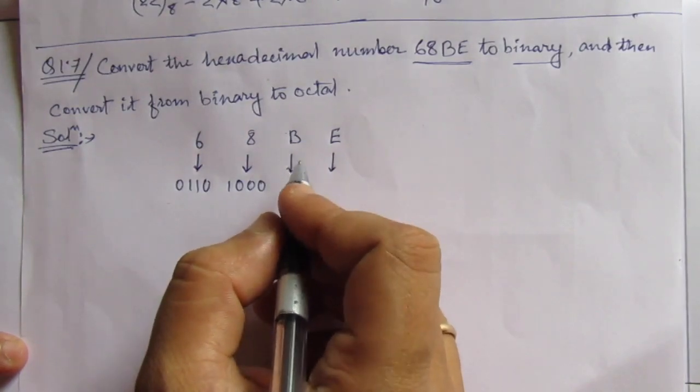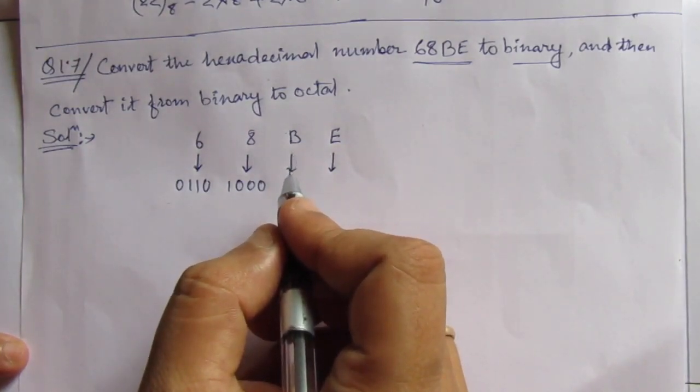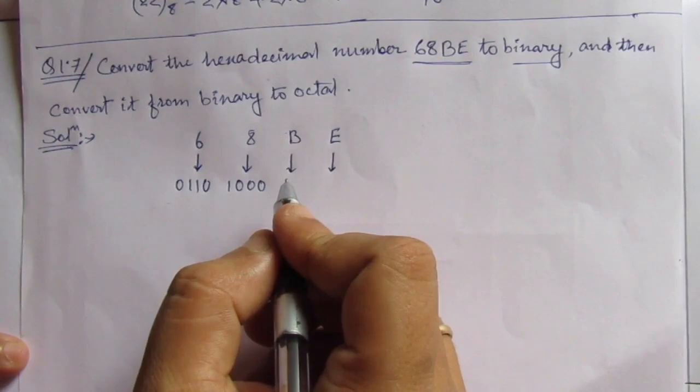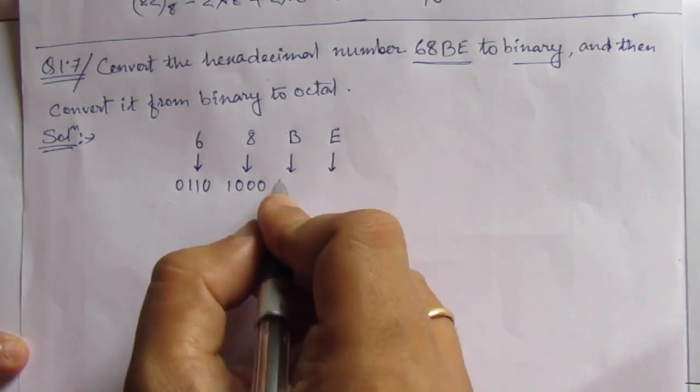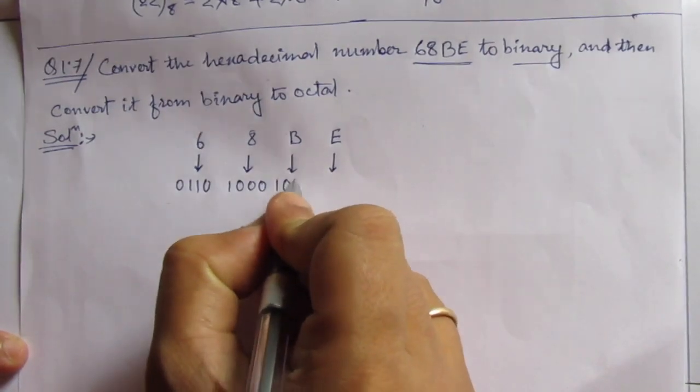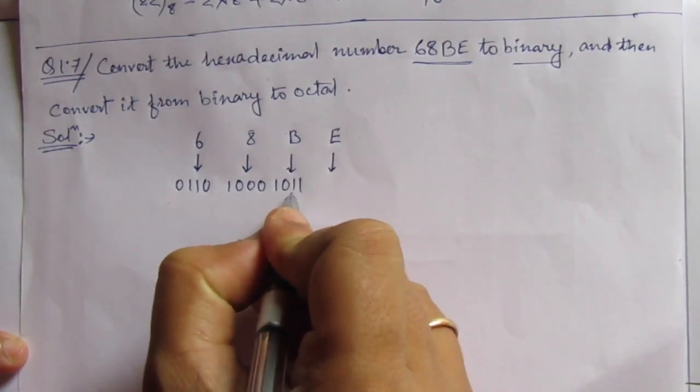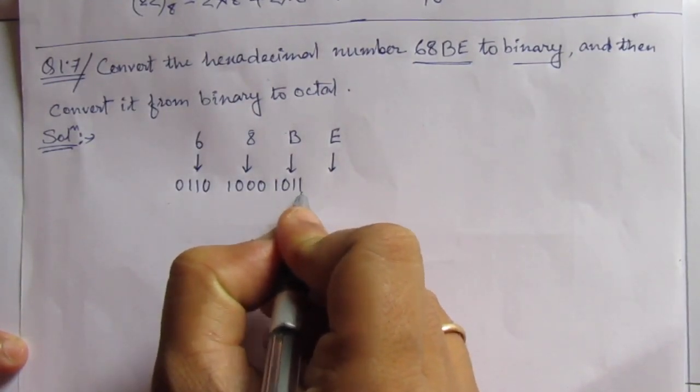Then B is represented as... B means A is 10 and B is 11. So here we have to write 1011. This is 8, then 10 plus 1 is 11.